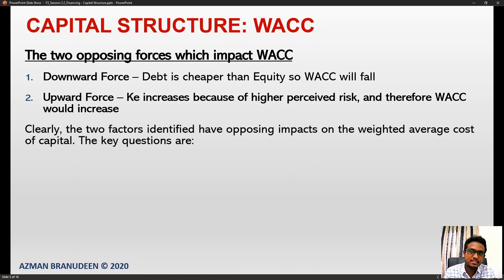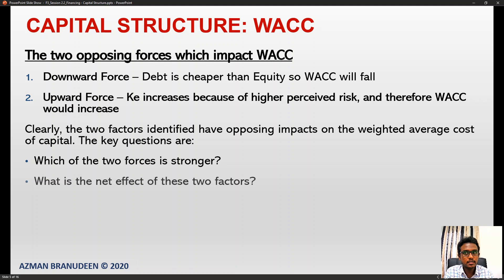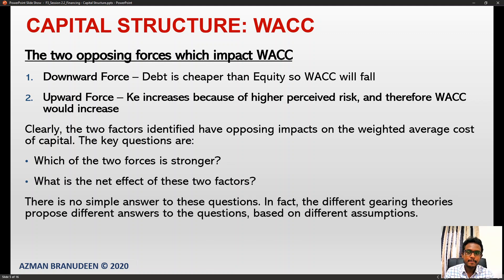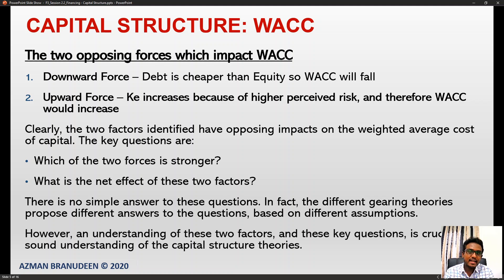The two factors identified have opposing impacts on the weighted average cost of capital. The key questions are: which of the two forces is stronger, and what is the net effect? There is really no simple answer. The different gearing theorists propose completely different answers based on different assumptions, and understanding these two factors is crucial to a sound understanding of capital structure theories.